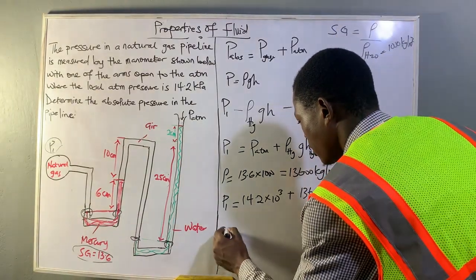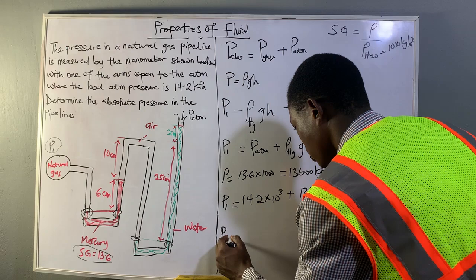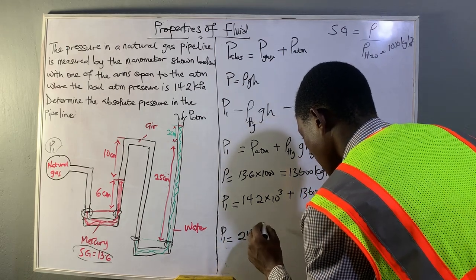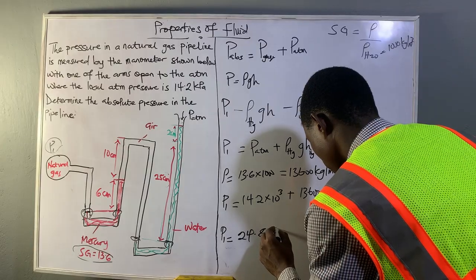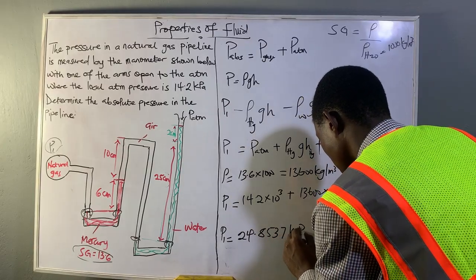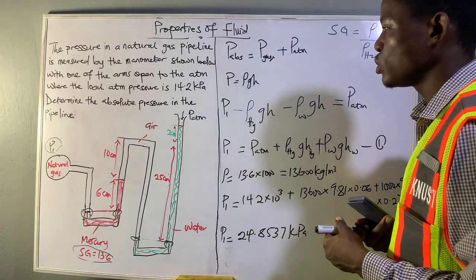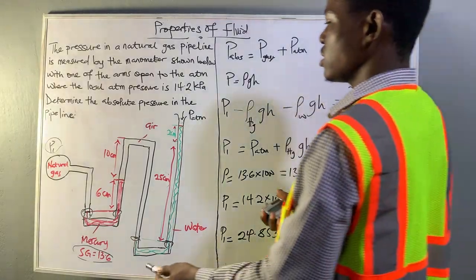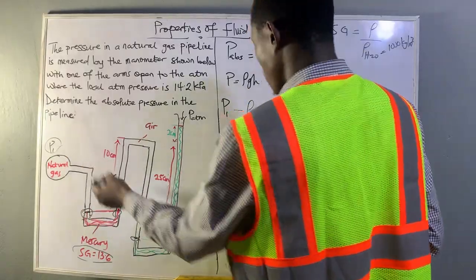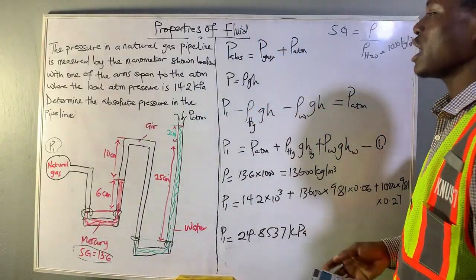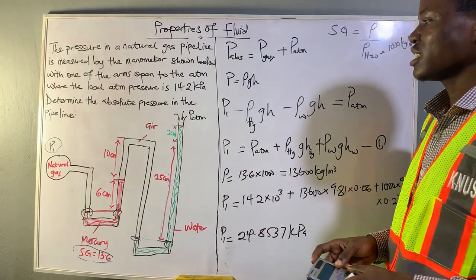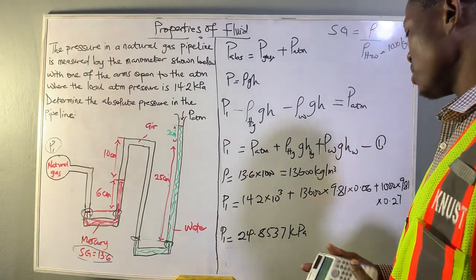After the computation, our answer is 24.8537 kilo Pascal. This is the absolute pressure in the system, in our manometer. This is what we were asked to find, and this is how we approach manometer pressure questions.